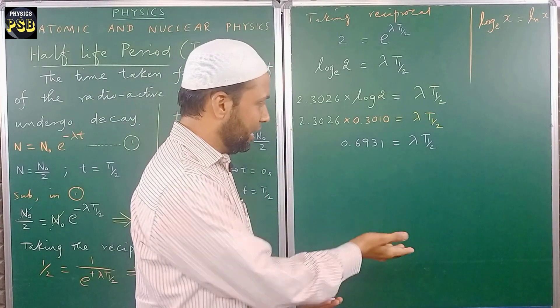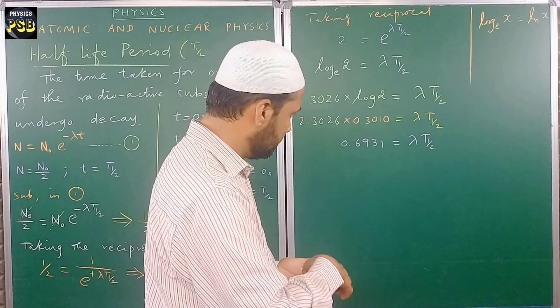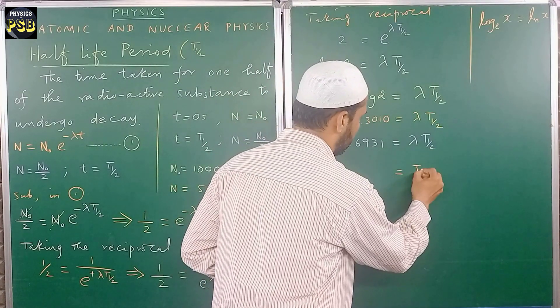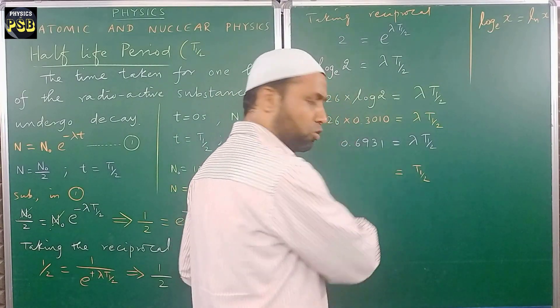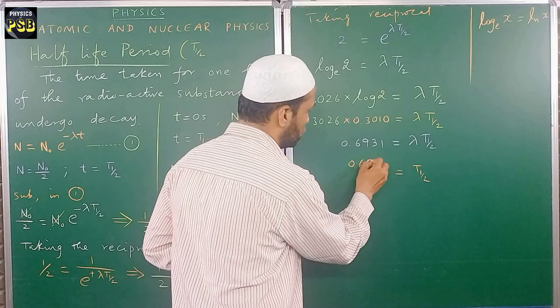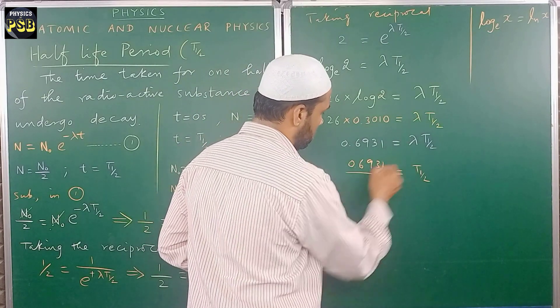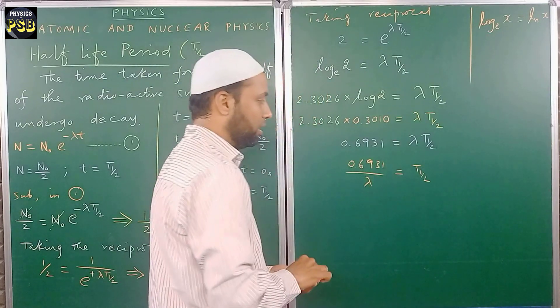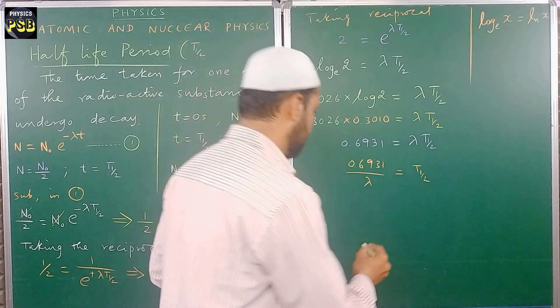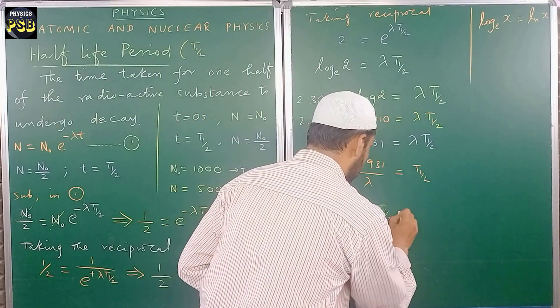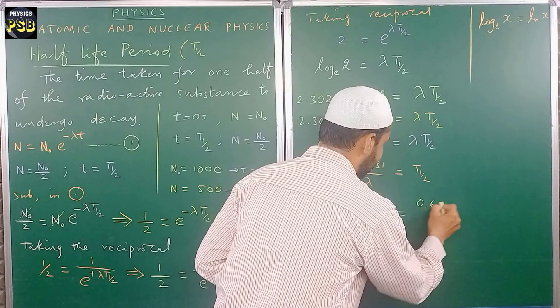Here my aim is to get the value of t half. So I'll keep t half on one side, and lambda is to go to the other side. When I do so, it goes to the denominator. I'll rearrange this to get the final expression. T half is equal to 0.6931 divided by lambda.